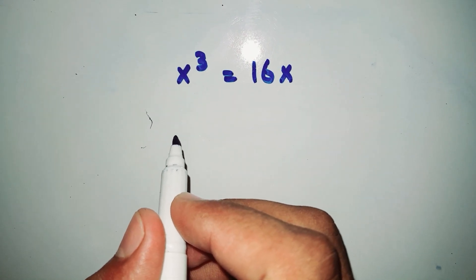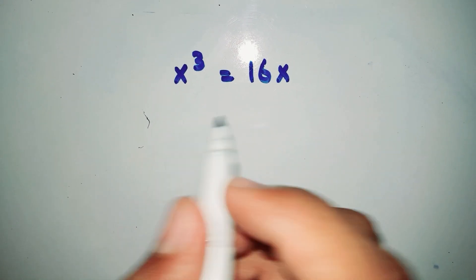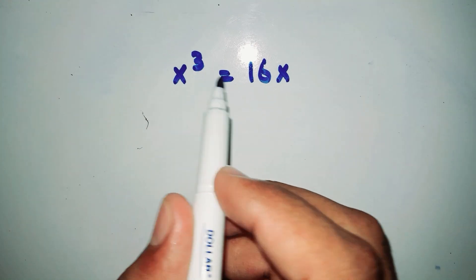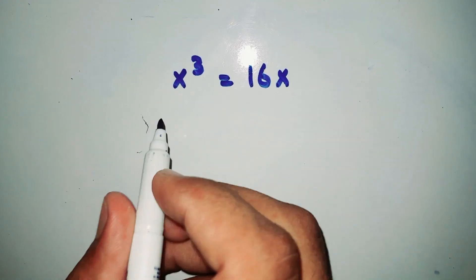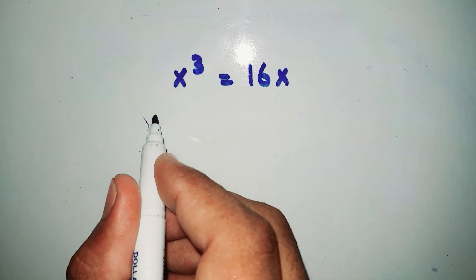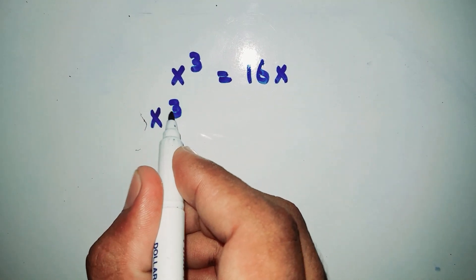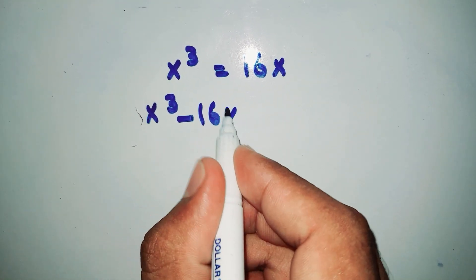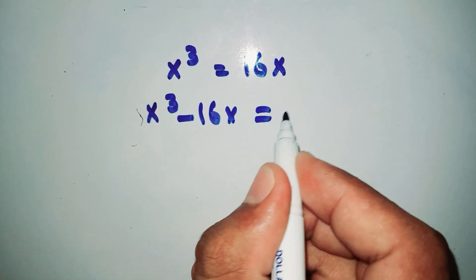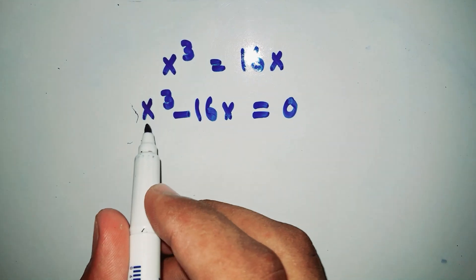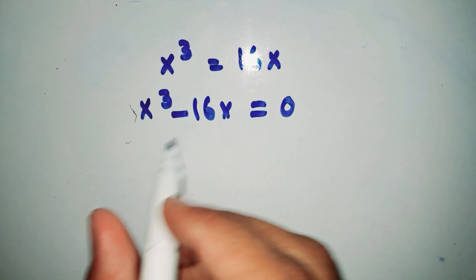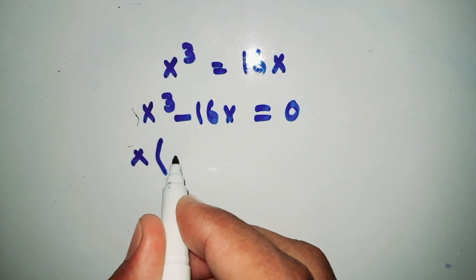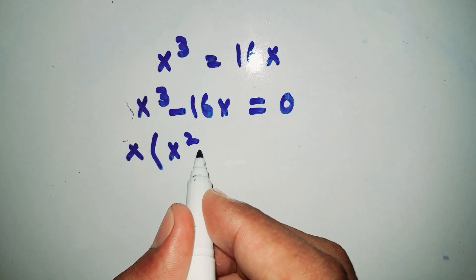Welcome back to another video. In this video we are going to find the value of x, where x cubed is equal to 16x. First, we write x cubed minus 16x is equal to 0. Then we take x as common, leaving x squared minus 16.